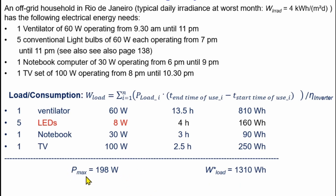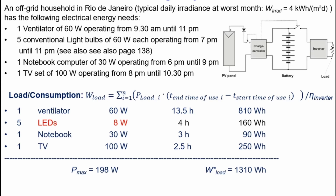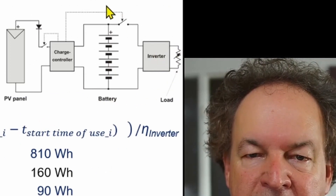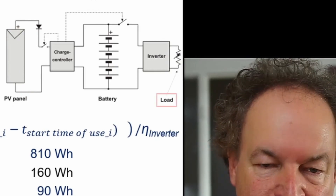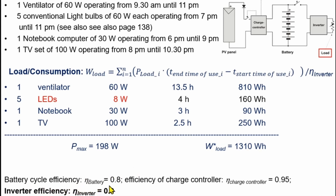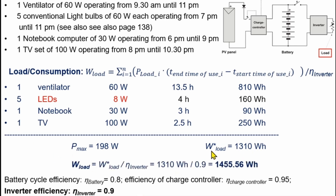For the inverter rating, if all appliances run simultaneously the maximum power is 198 watts, so an inverter of about 200 watts would suffice. Including the inverter efficiency of 0.9, we divide the load by the inverter efficiency. The actual load the PV system must supply is therefore 1,455.56 watt-hours per day.